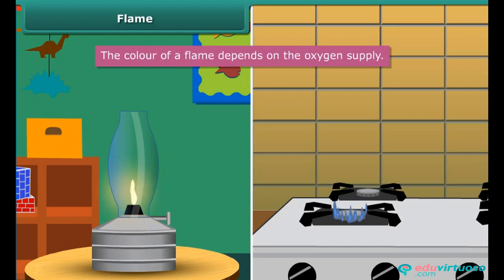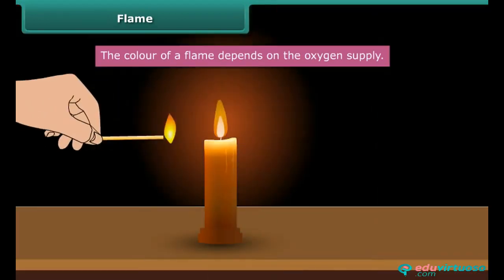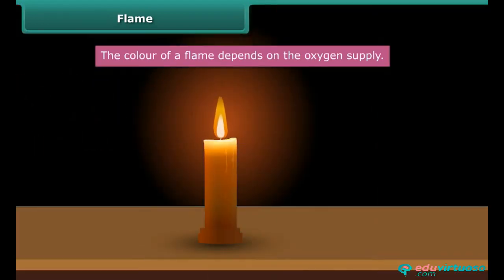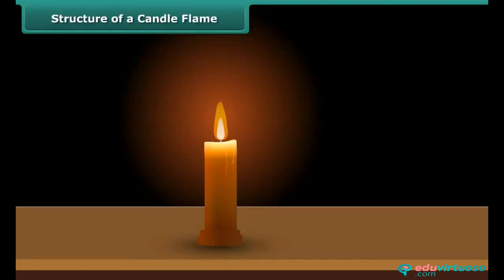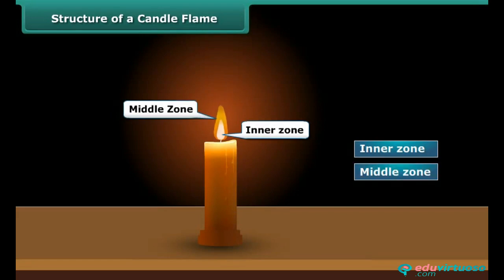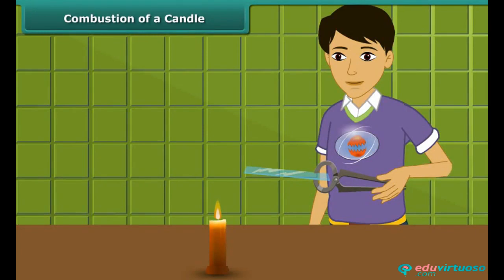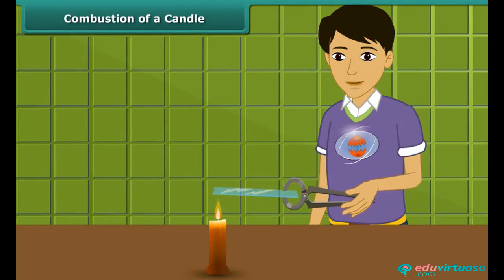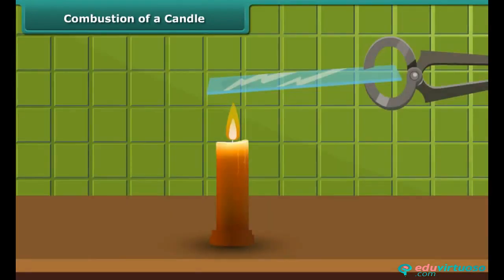When we burn the candle with a matchstick, the heat of the matchstick melts and vaporizes wax, which rises through the wick and forms a flame. A candle flame can be divided into three regions: inner zone, middle zone, and outer zone. Let us watch Rohan performing an activity — he is introducing a glass plate into the luminous zone of the candle flame with the help of a pair of tongs.